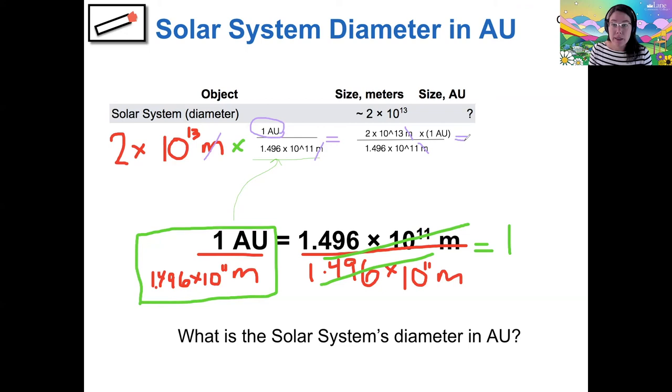So in order to divide in scientific notation, I'm first going to divide those prefactors. So I'm going to end up with 2 divided by 1.496. And then that's going to be multiplied by 10 to the 13 divided by 10 to the 11. And so those factors of 10, the powers are going to subtract. So I'll end up with 13 minus 11. It's always the one in the numerator minus the one in the denominator.